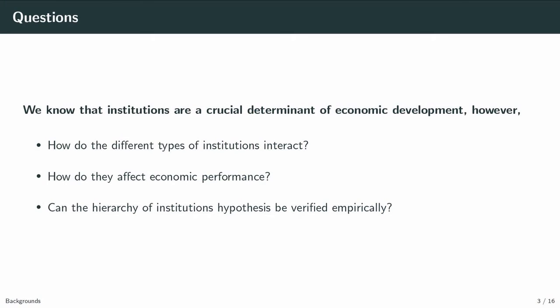So, in this study, I want to ask: how do the different types of institutions interact? How do they affect economic performances? Can the hierarchy of institutions hypothesis be verified empirically?